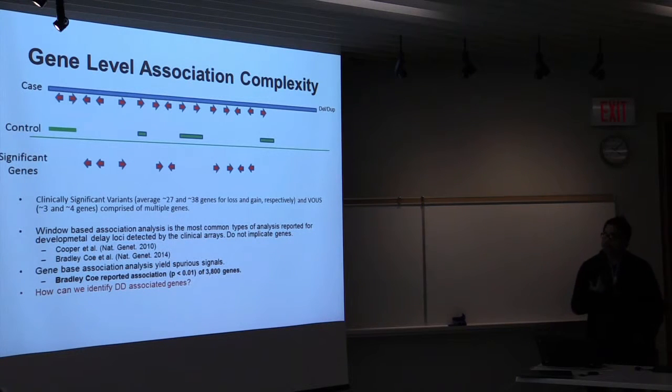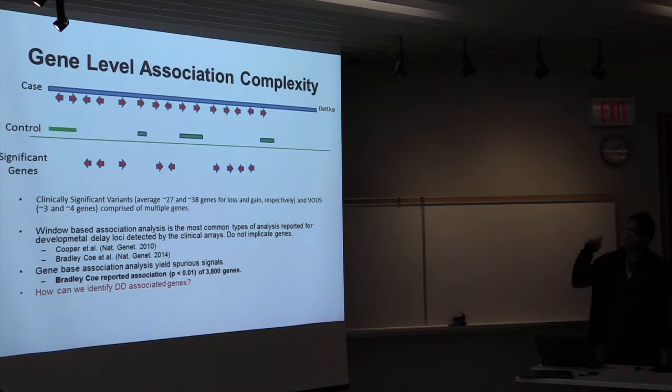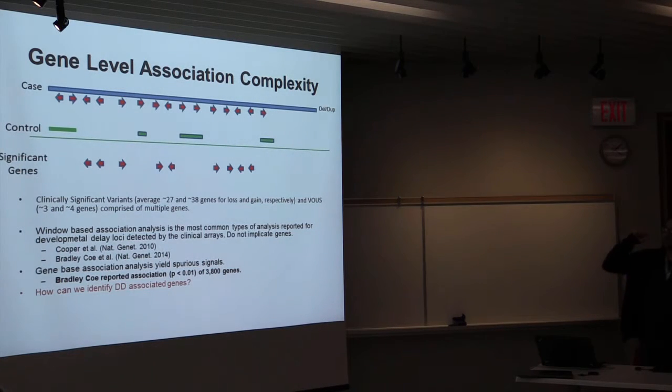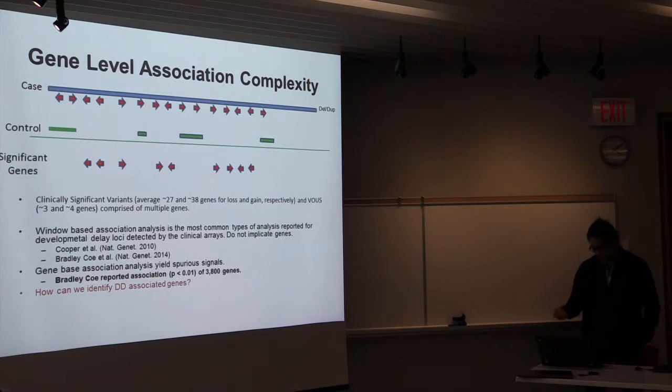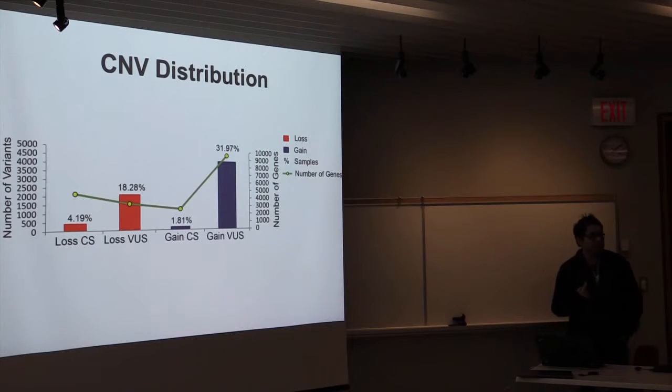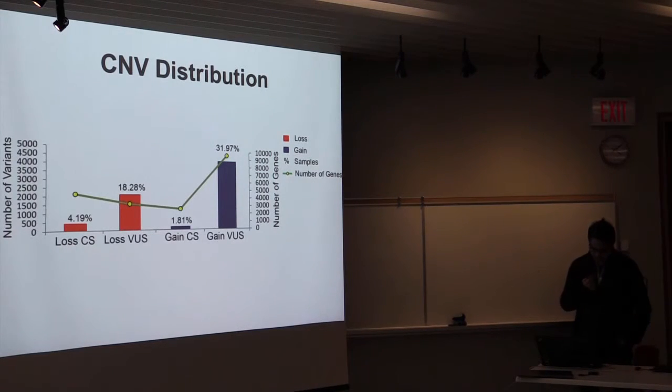Initially, anybody will think, you have case-control data, why don't you do a case-control association study? Well, you can do it of course, but the problem is the control variants are small for the clinically significant variants. Even if you do gene-level association, you will end up getting so many genes with high p-values. So at the end, you do not know what are the genes, because one study in Nature Genetics came out showing 3,800 genes with high p-value at least 0.01. So really, we don't know how to approach this to find or tease out at least the candidate genes.